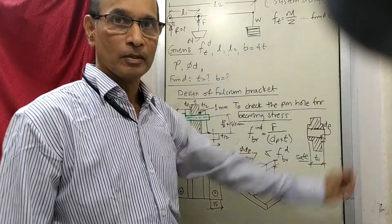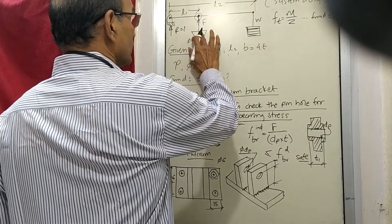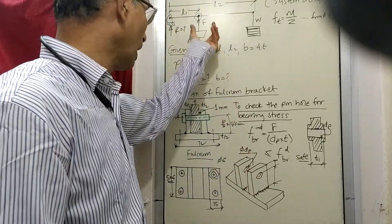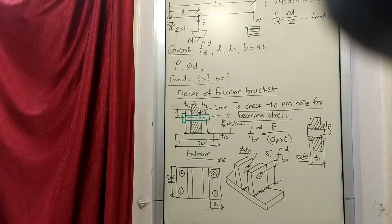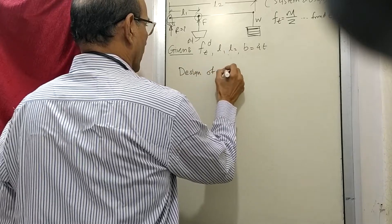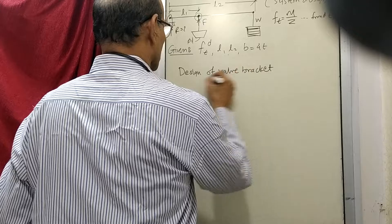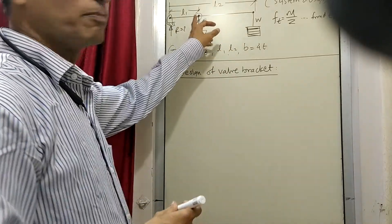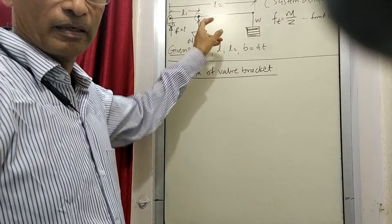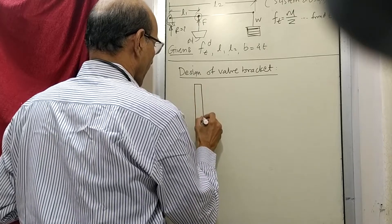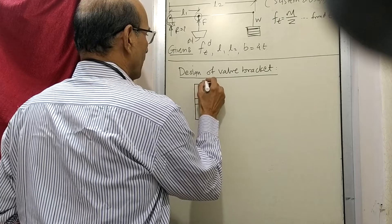We are talking about system design. Having done the fulcrum bracket, the next thing is the design of the wall bracket — how this wall arrangement is to be made. By similar criteria we will think about how this wall bracket is to be made. At this place the lever has a hole and the dimension is b1, since we are at the location where the width is b1.